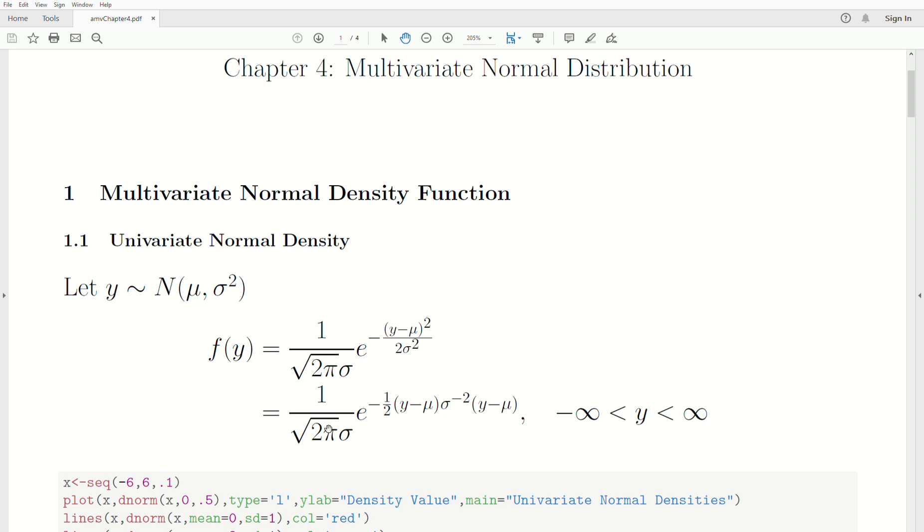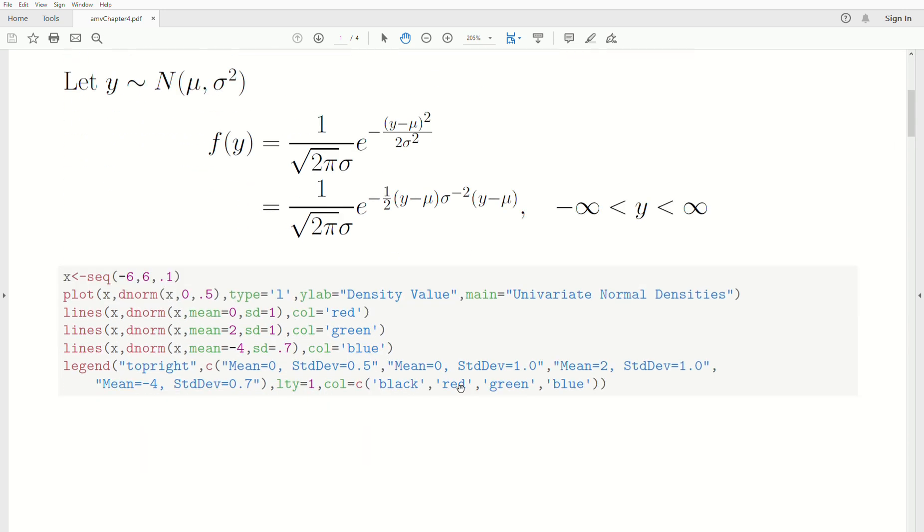And so, these are what's called normalizing constants, and that's what forces the density to integrate to one. And so, we have E raised to this exponent, minus one-half, and then I rewrote the exponent to look like a quadratic form, and it is a quadratic form in one dimension. So, this is Mahalanobis distance squared, this quadratic form.